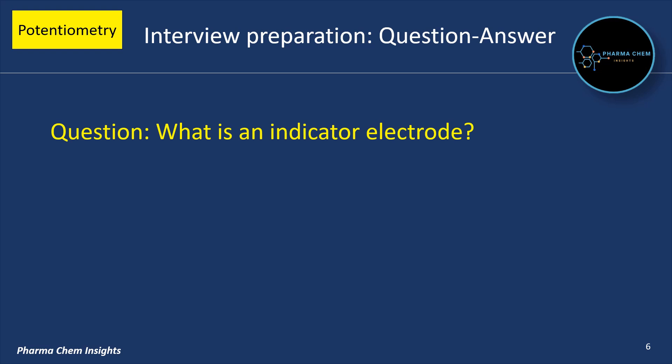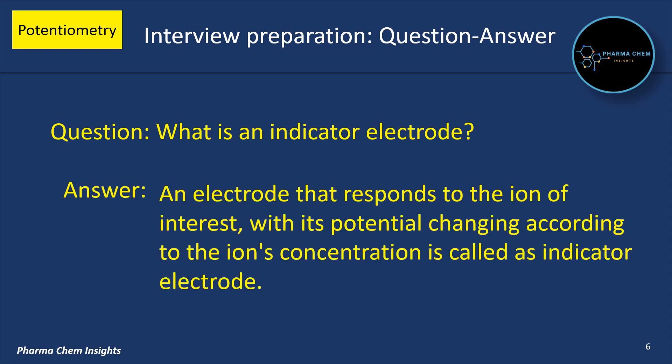What is an indicator electrode? An electrode that responds to the ion of interest, with its potential changing according to the ion's concentration, is an indicator electrode.